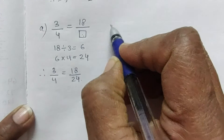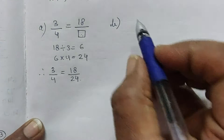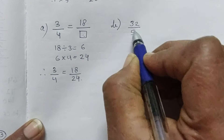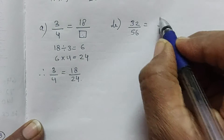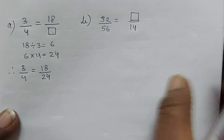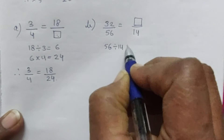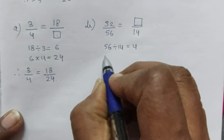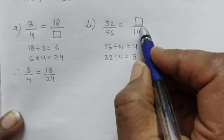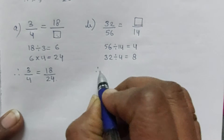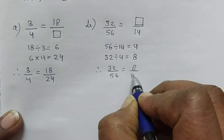Part B — 32 by 56 with denominator given as 14; we need to find the numerator. We divide 56 by 14, which equals 4. Then divide 32 by 4, which equals 8. So the numerator is 8, and the equivalent fraction of 32 by 56 is 8 by 14.